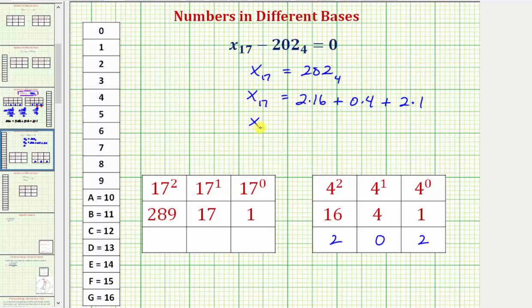So now we have x base 17 is equal to, here we have 32 plus 0 plus 2, which is equal to 34 base 10. So now to find the value of x, we want to write 34 base 10 in base 17. Because we have base 17, the place values are powers of 17 as shown here.